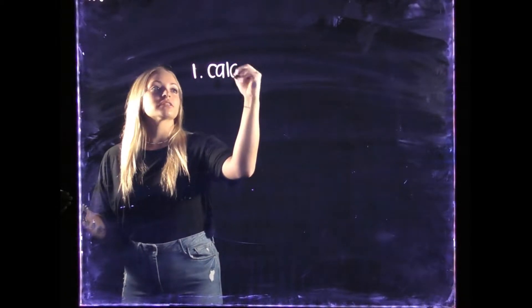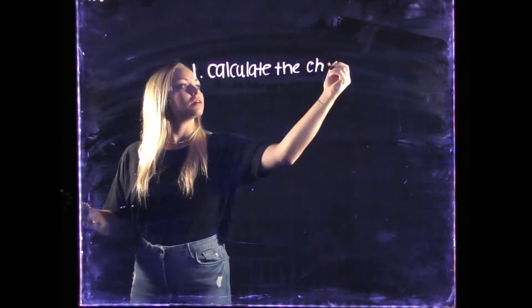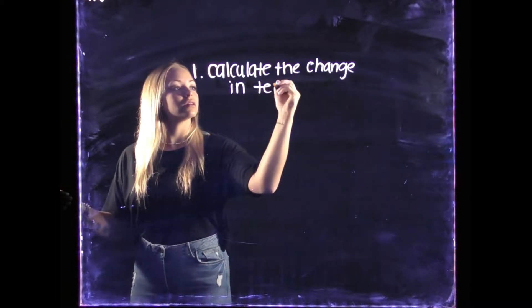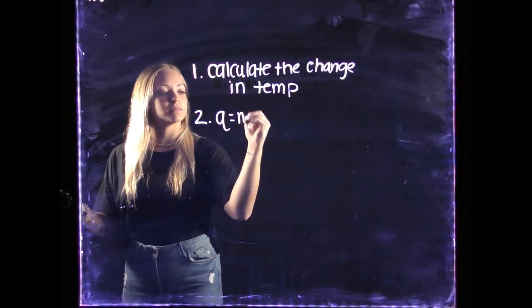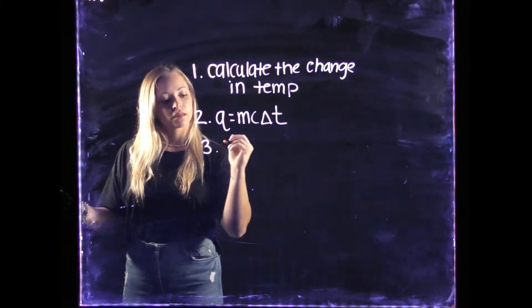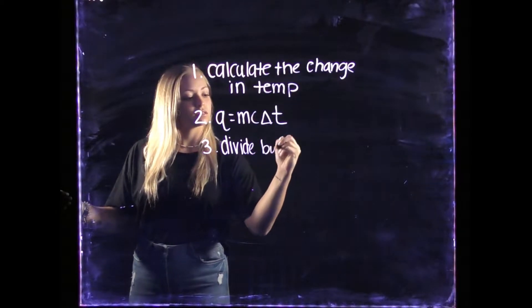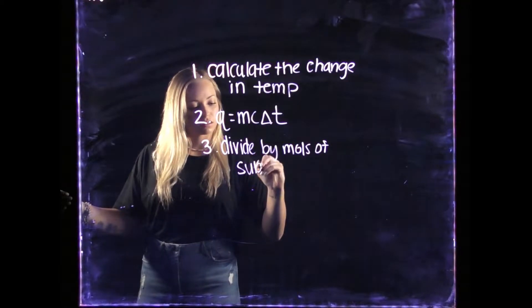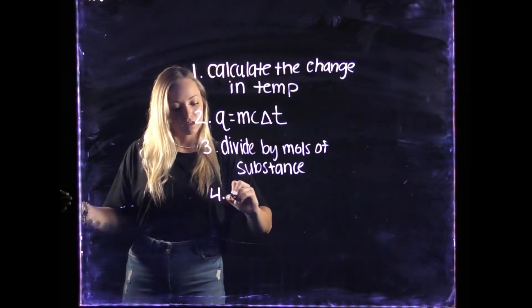One, calculate the change in temperature. Two, use equation Q equals mc delta T. Three, divide by moles of the substance. And four, flip the sign.